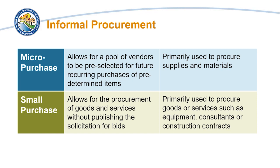Micropurchases are for the procurement of items that do not exceed $10,000 in the aggregate. Micropurchases allow for a pool of vendors to be preselected for future recurring purchases of predetermined items and are primarily used to procure supplies and materials. Small purchases allow for the procurement of goods and services that do not exceed $250,000 in the aggregate. Under small purchases, the procuring entity is not required to publish solicitations for bids. The small purchase method is primarily used to procure goods or services such as equipment, consultants, or construction contracts.